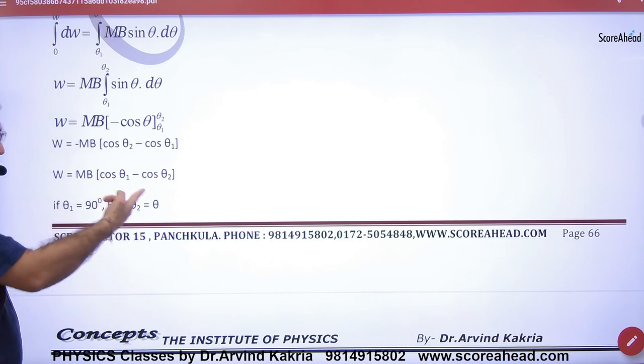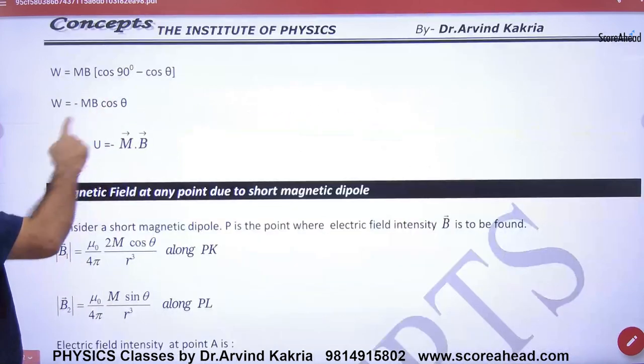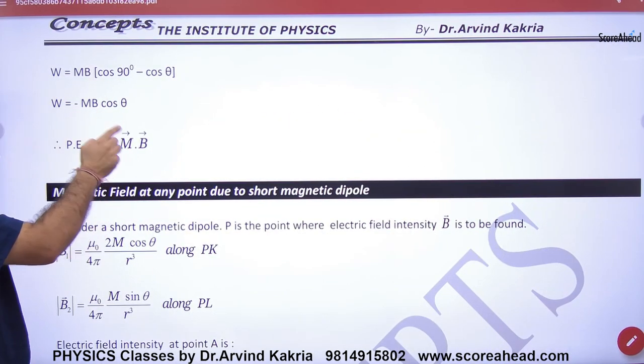If one angle is 90°, one angle is theta. What is the potential energy formula? Minus mb cosθ. And in the form of vector form,